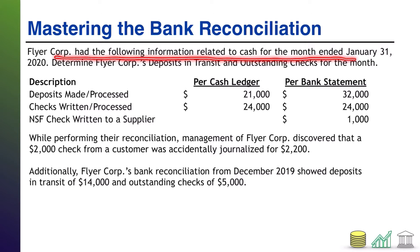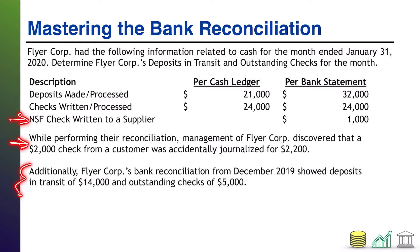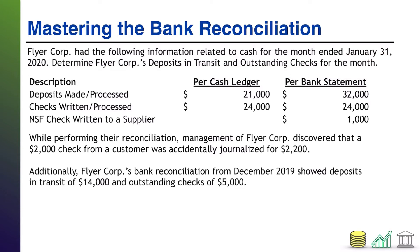Flyer Core had the following information related to cash for the month ended January 31st, 2020. I give you information about deposits made, checks written from both the company and bank standpoint, and additional information about an NSF check, an error, and prior month deposits in transit and outstanding checks. The goal is to calculate Flyer Core's deposits in transit and outstanding checks for the January 31, 2020 bank reconciliation. Take a moment, pause the video, and try to solve this on your own — it is difficult — then come back and I'll walk you through the solution.